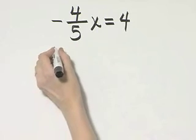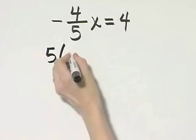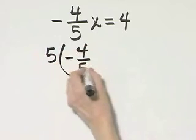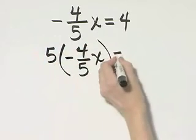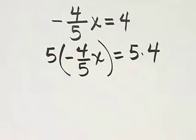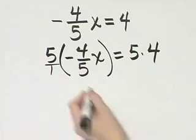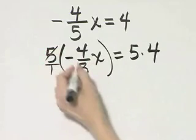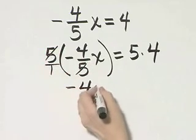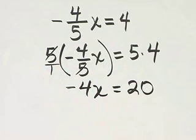I'll multiply the left side by 5, and I'll multiply the right side by 5. Now notice what happens. Think of it as 5 over 1. The 5s divide out, and I have negative 4x is equal to 20.